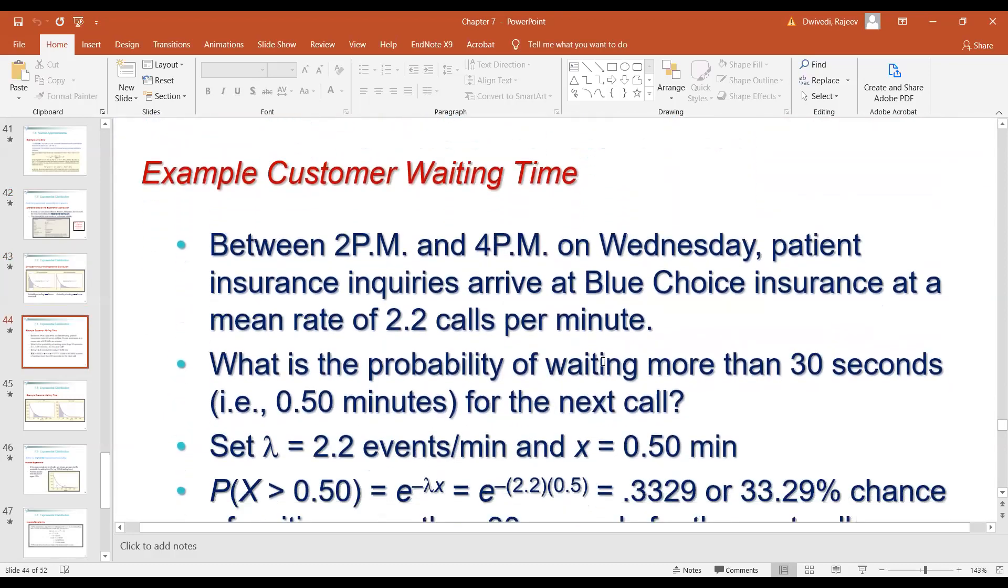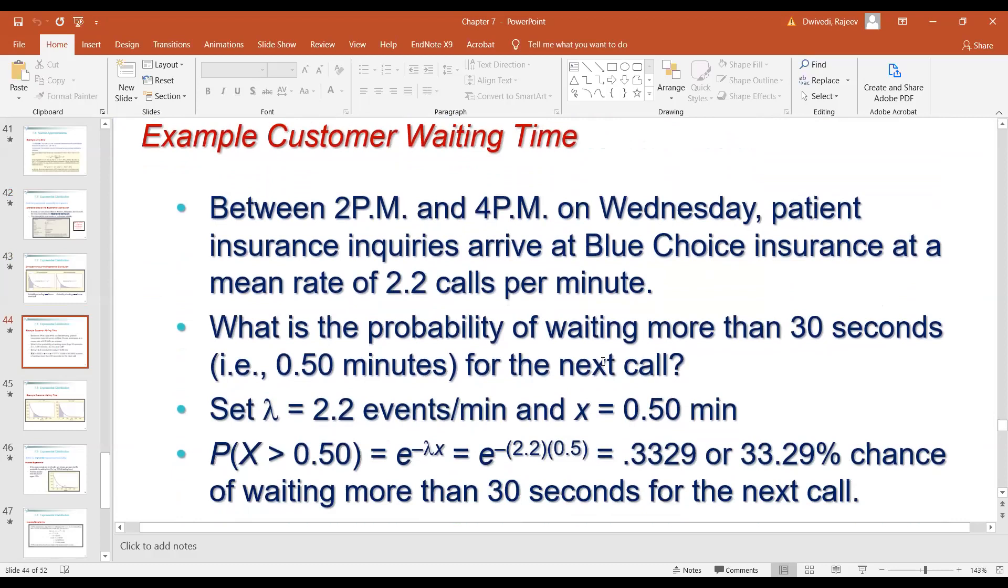This question is again between mean time. Between 2pm to 4pm, the rate of calls are 2.2 calls per minute. What would be the lambda in this case? Very simple. Lambda would be 1 divided by 2.2 and that is how we got 4.4.